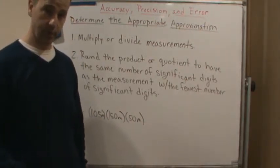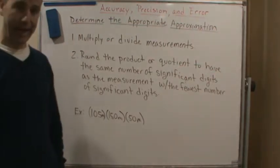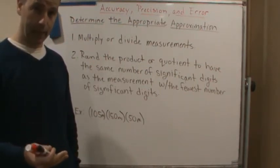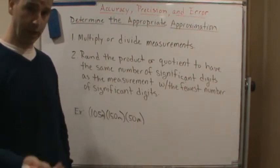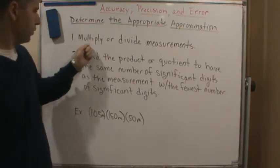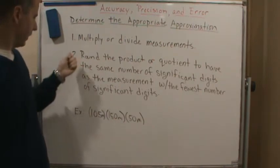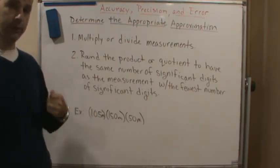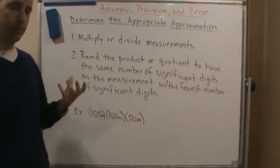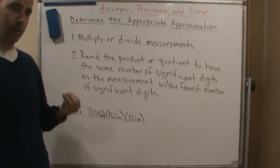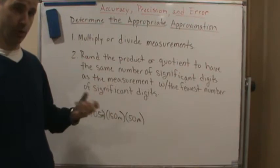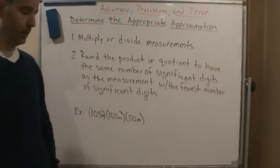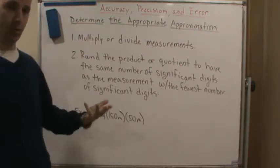To determine the appropriate approximation when multiplying or dividing measurements: first, the same thing applies — you have to have a common unit, so change units if necessary. Then multiply or divide as the operation calls for. Finally, round the product or quotient to have the same number of significant digits as the measurement with the fewest number of significant digits. That's what we round to, whatever place value gives us that.